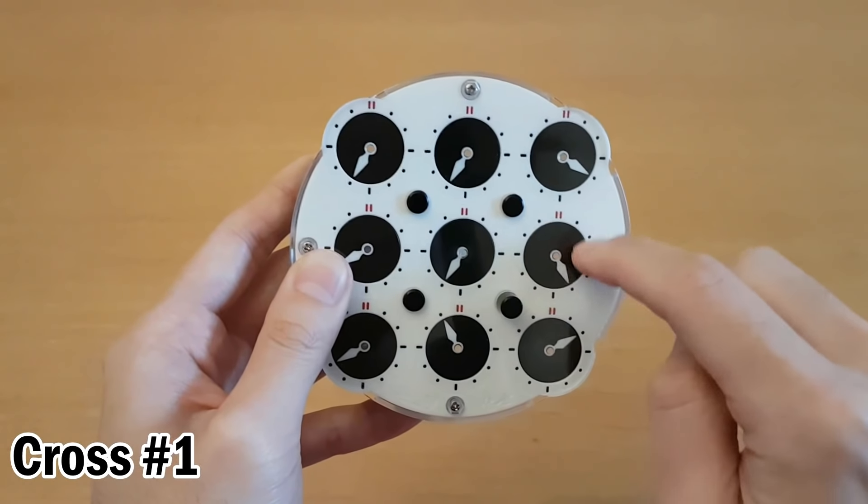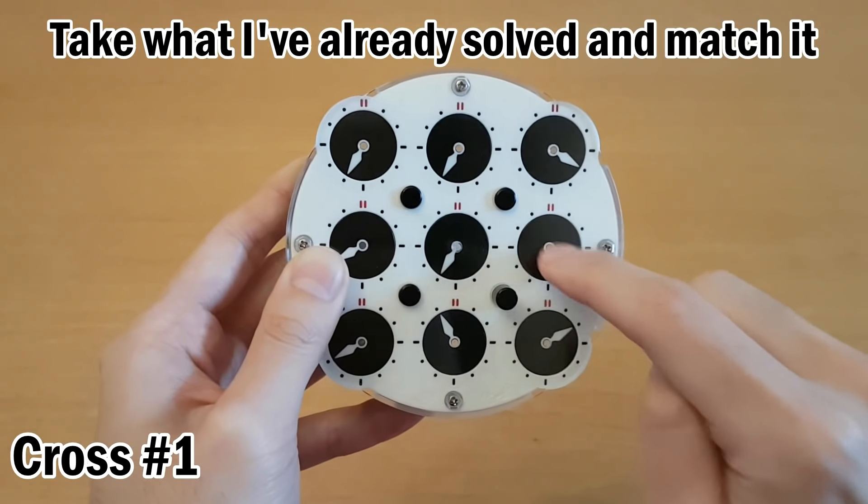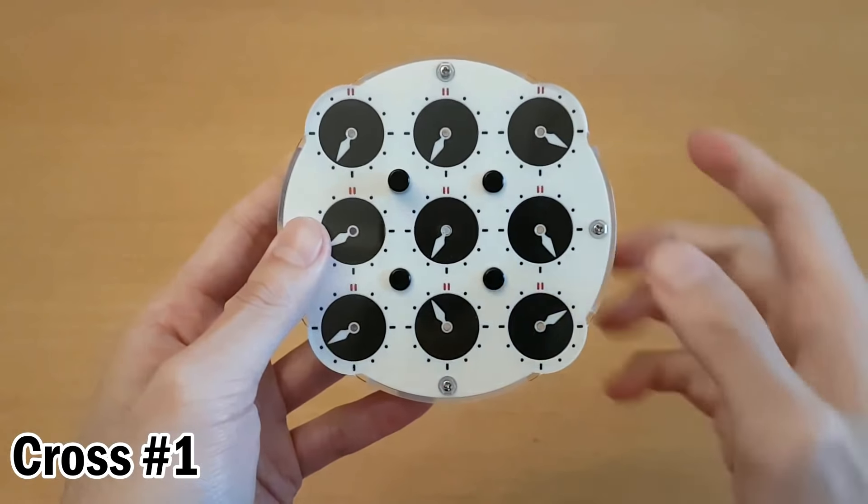I want to solve this one next, but instead of thinking about it as solving this one, I'll take what I've already solved and match it to this one. So how that can work is by turning this pin as it moves these two, but not this one.